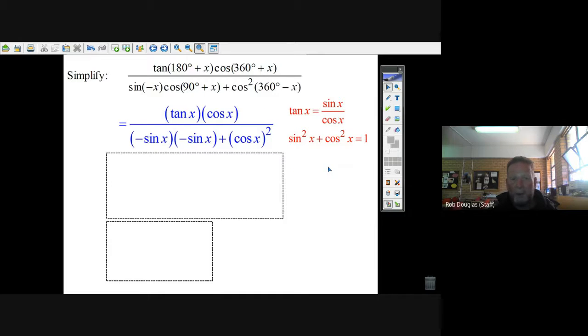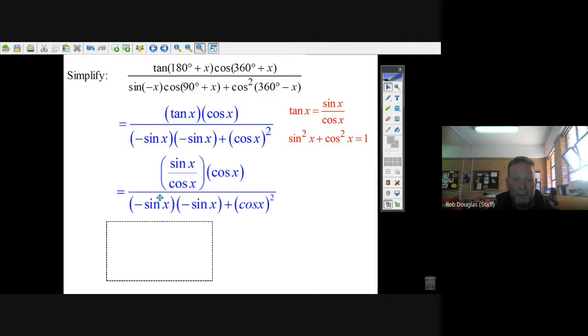Now all you do is rub out the tan x and put sine over cos x, and they give you a mark. It's so easy. Now minus sine times minus sine is actually sine. It's going to be sine squared plus this is cos x, going to be plus cos squared.